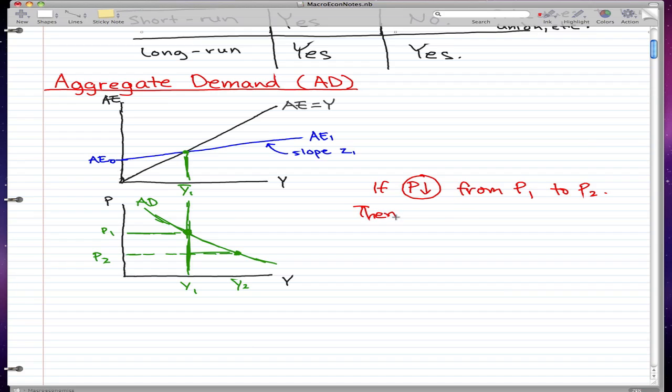What will happen is our consumption, our autonomous consumption, will go up. Our autonomous investment will also go up. Our exports will also go up.